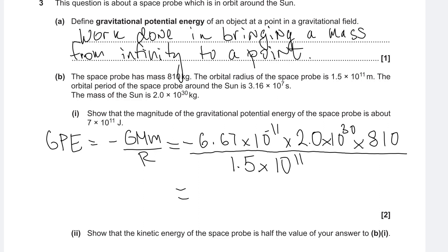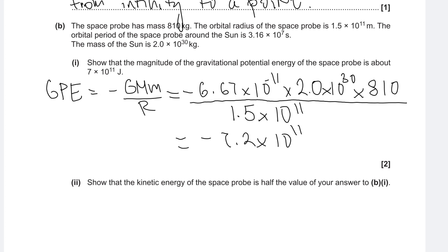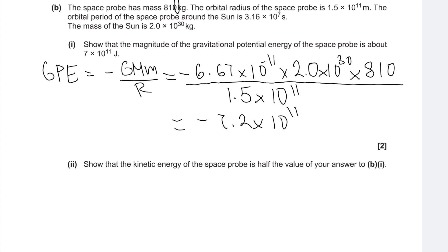Putting this into a calculator gives minus 7.2×10¹¹. We're just given the magnitude so we don't need to worry about the negative sign. Next: show that the kinetic energy of the space probe is half this value.